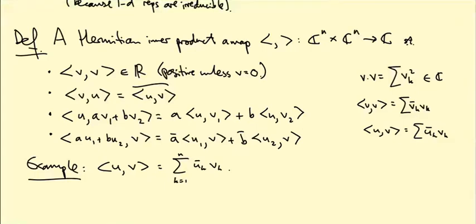So what does it mean for this to be invariant? It means that if I apply a matrix from my representation to U and to V, that shouldn't change the inner product. So <R(g)U, R(g)V> should be <U,V>. So if I have such an inner product with this nice symmetry, this invariance, then the claim is the orthogonal complement of a sub-representation is a sub-representation.